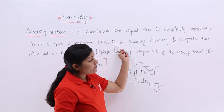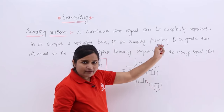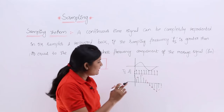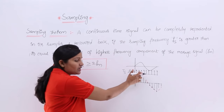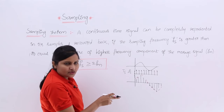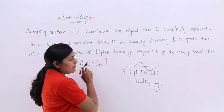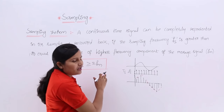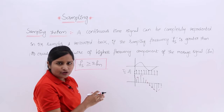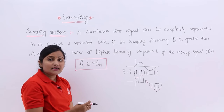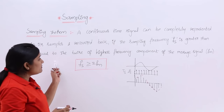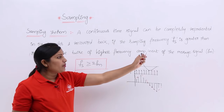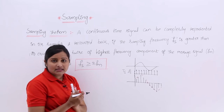The condition is: sampling frequency — which is the frequency of the pulse train — must be greater than or equal to twice the maximum (highest) frequency component of the message signal.